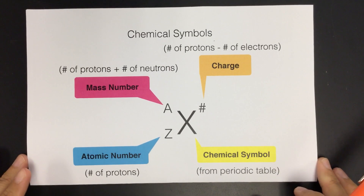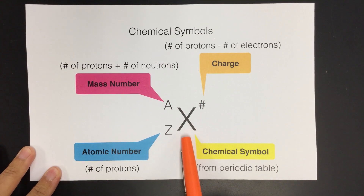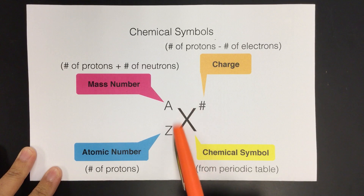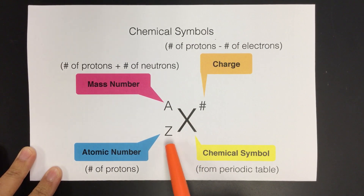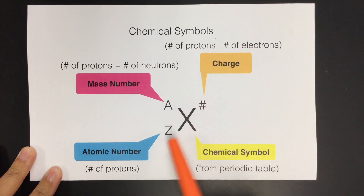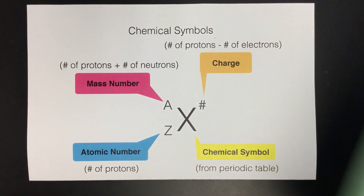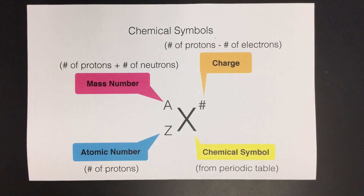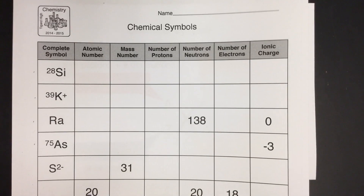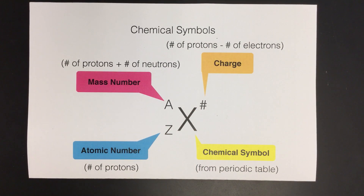This is from your notes. It's a little graphic that shows a generic element X, which isn't a real element, but this could be any element symbol. It will have two numbers here and possibly a number here. So the X is your chemical symbol, which you find on your periodic table. You will need this. We're going to do some of the questions from your chemical symbols homework assignment, and I want to go over what this symbol shows us.